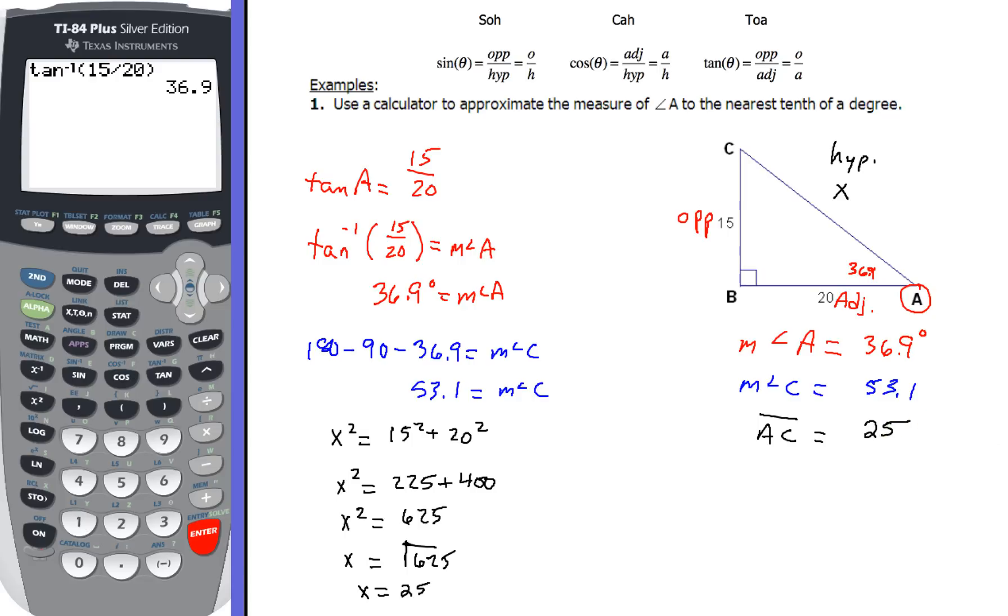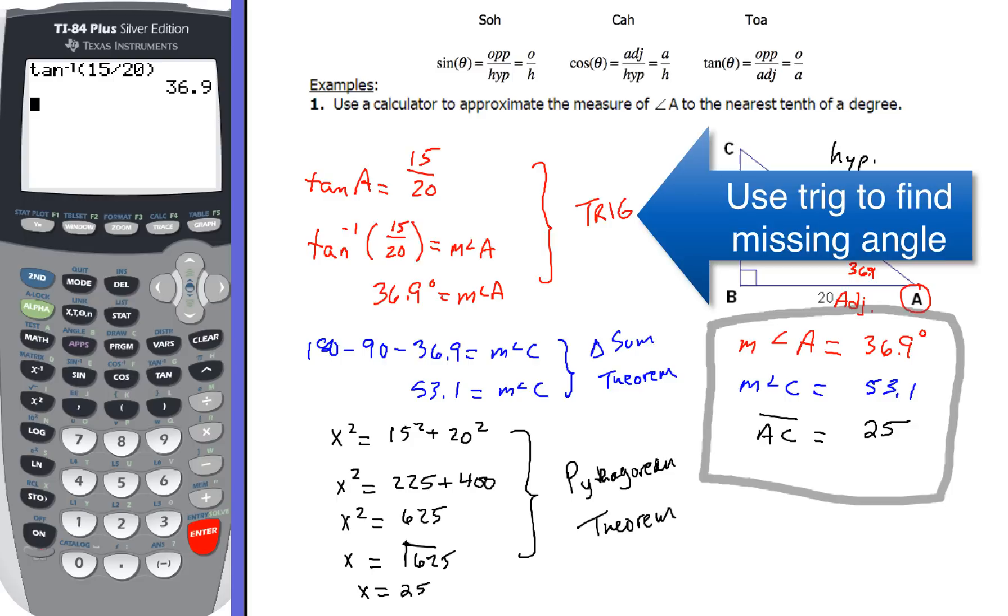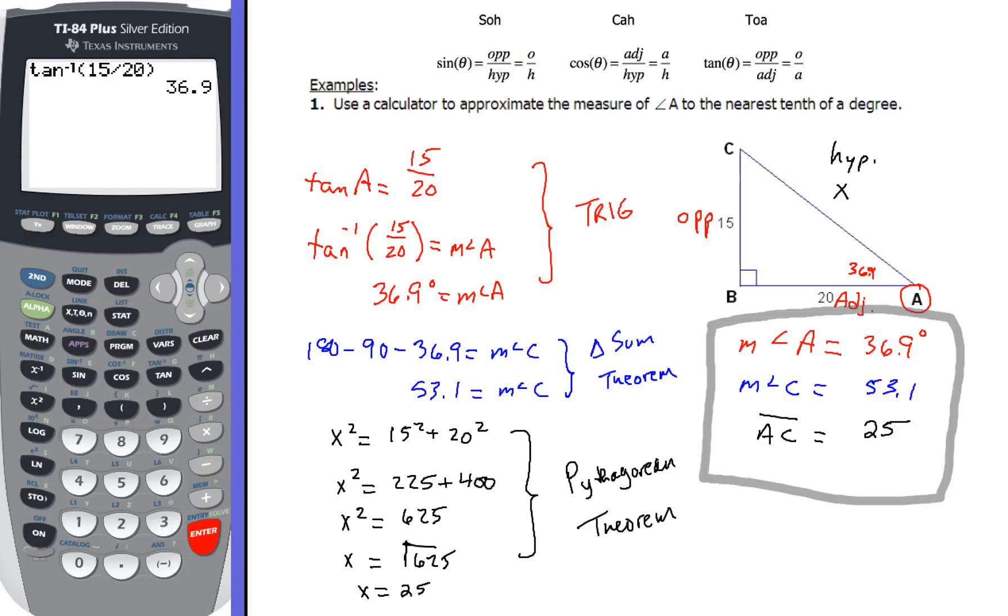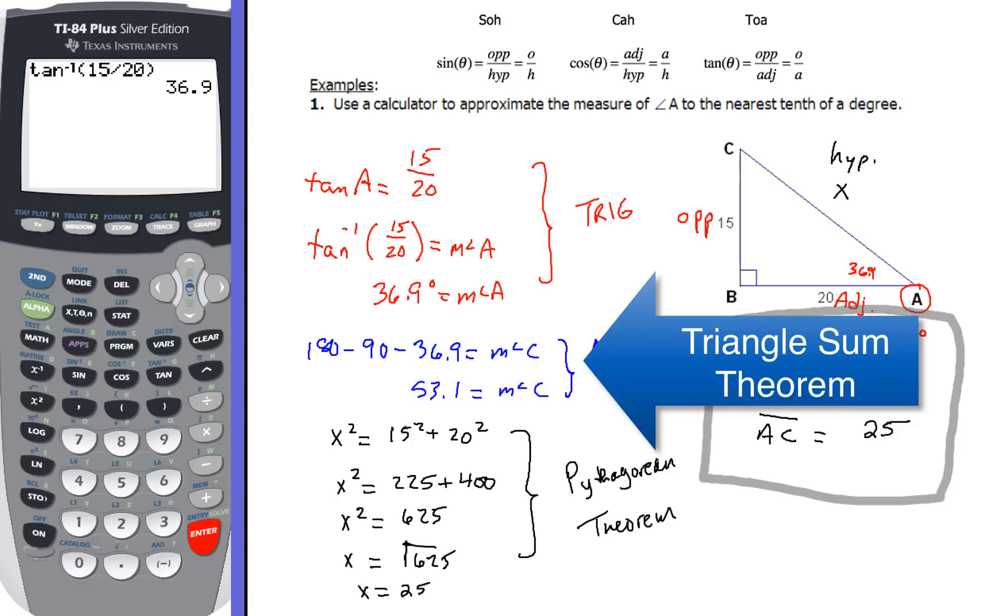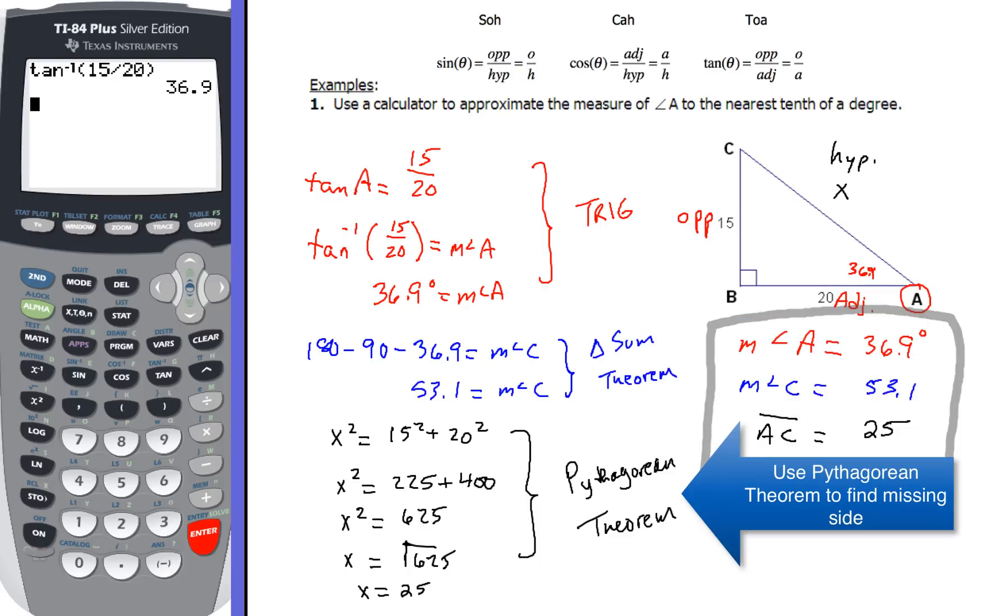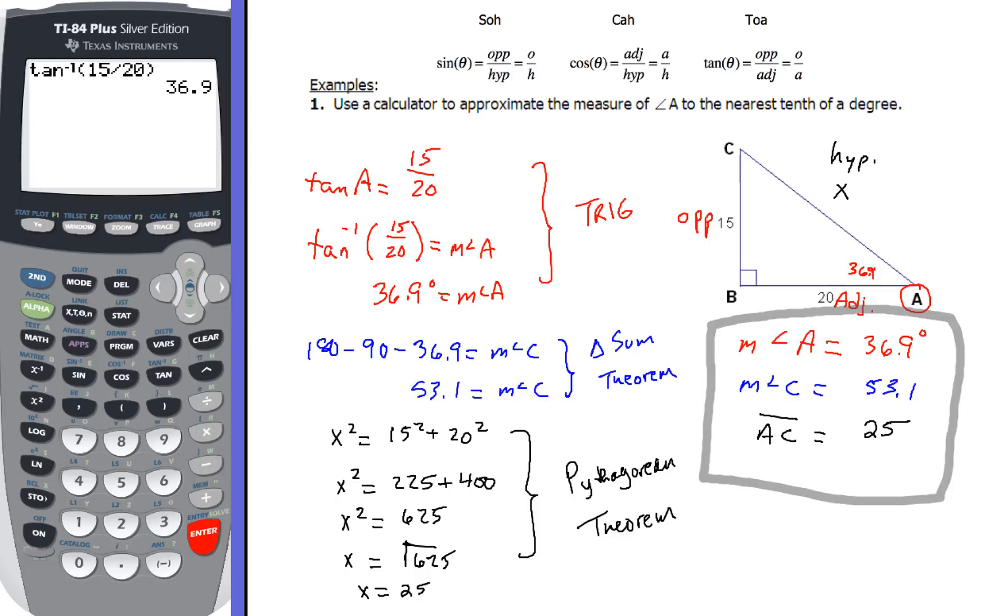So when I'm all done, I want to make sure that these pieces right here, that's all the information that I was asked to find and those were all the missing pieces. So I found all of those. So just to summarize here a little bit, to find angle A, we use trig. To find the other angle, the other acute angle, I use the triangle sum theorem. And lastly, to find the hypotenuse, the missing side, I use the Pythagorean theorem because I was given two sides in my right triangle.